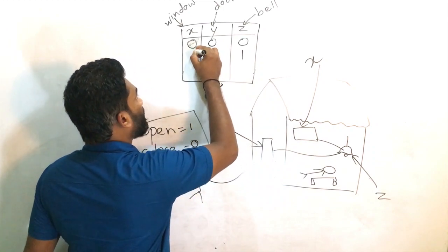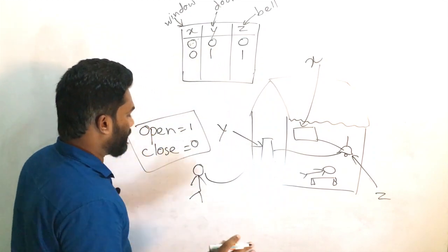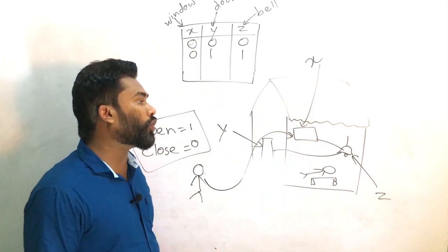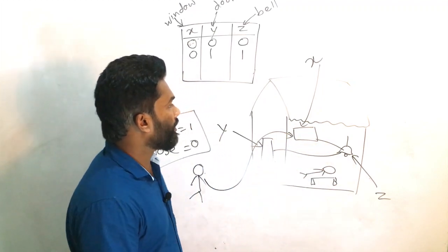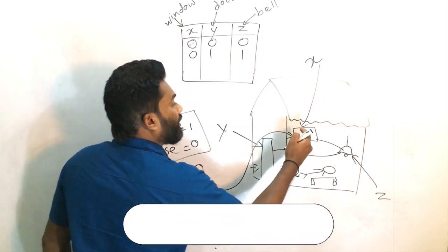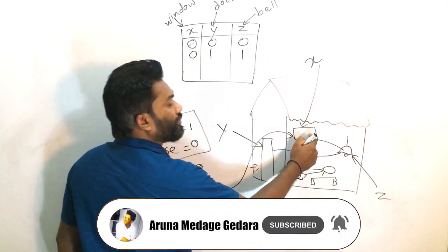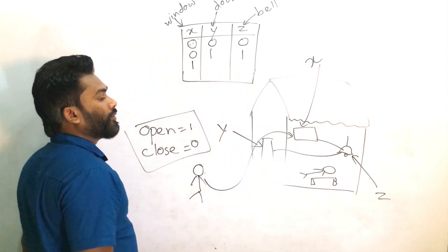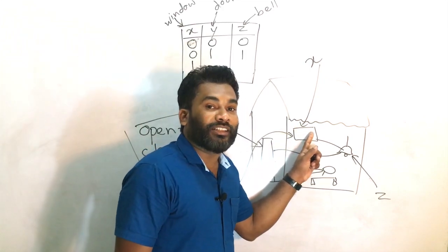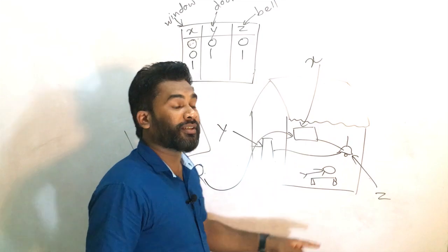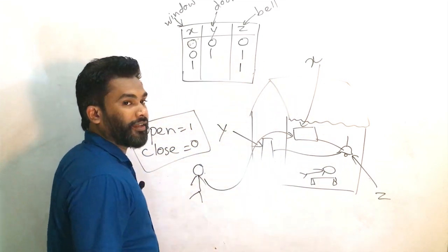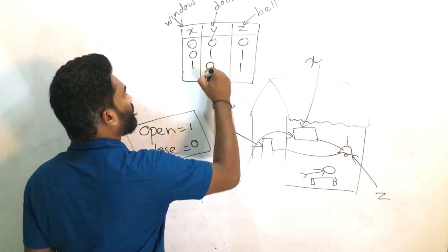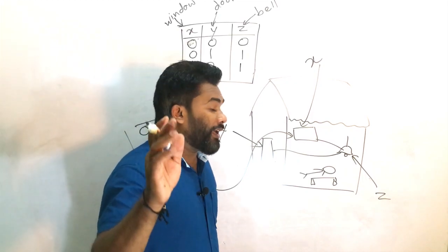Another day the same thief comes and tries to open the window to steal the money. The window — X — is open, so a message from this window goes to the bell. I'll write here 1 because a message from the window goes to the bell and the bell rings — write 1. But in that case the door is closed.